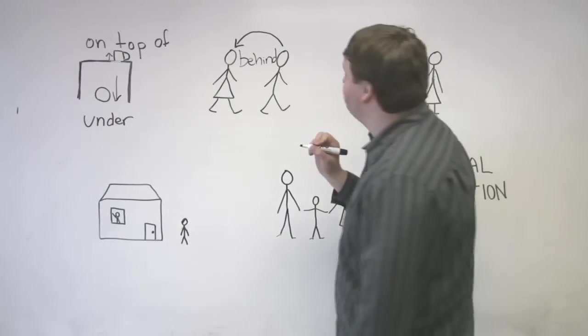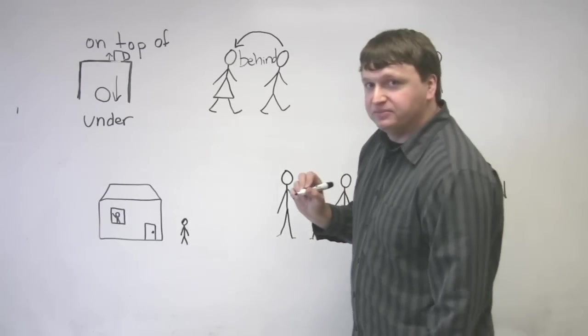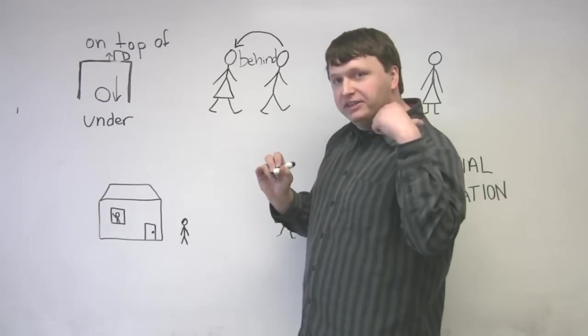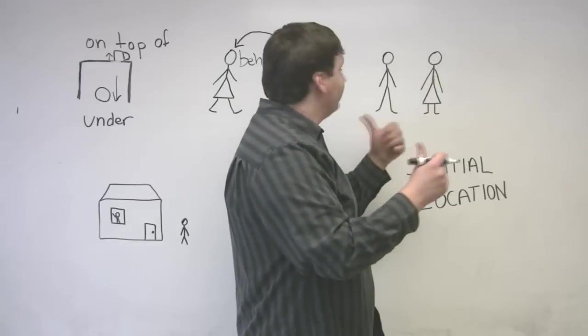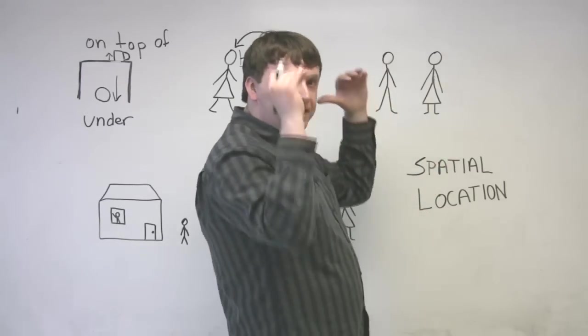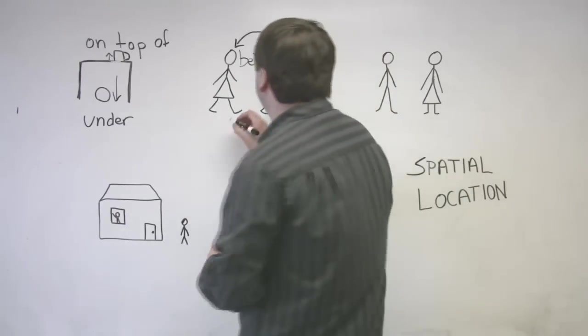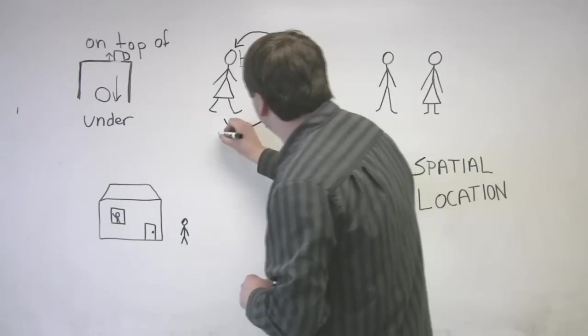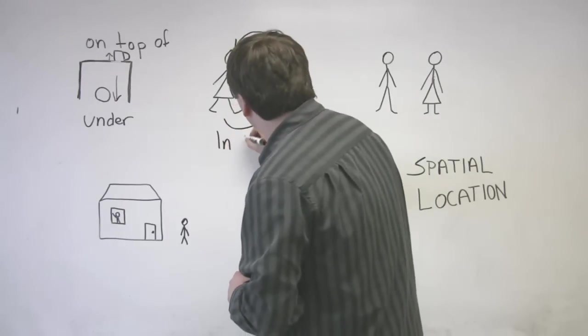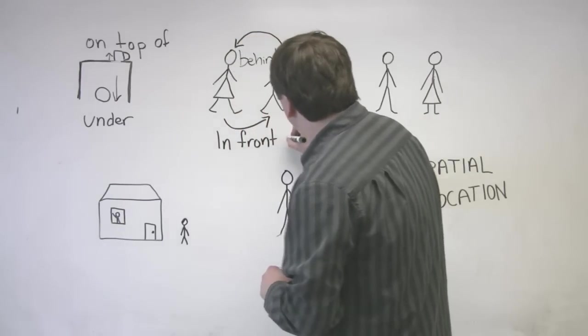So let's write the word behind in here. How about the boy in relation to the girl? So again, the girl is behind the boy. Just so we're not confused here. The girl is behind the boy. I am in front of the girl. In front of the girl.